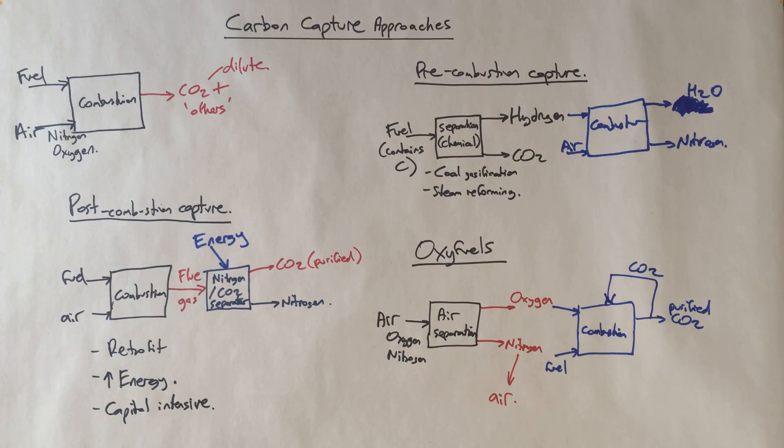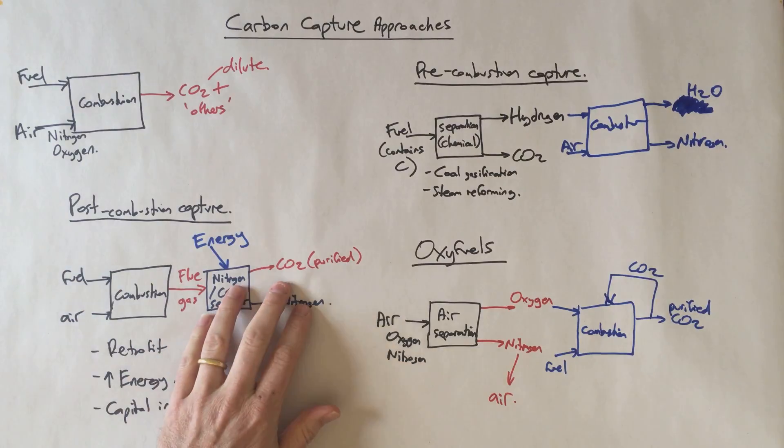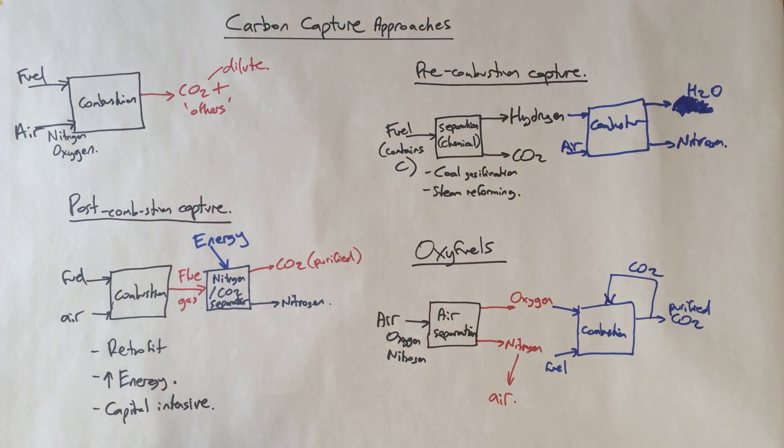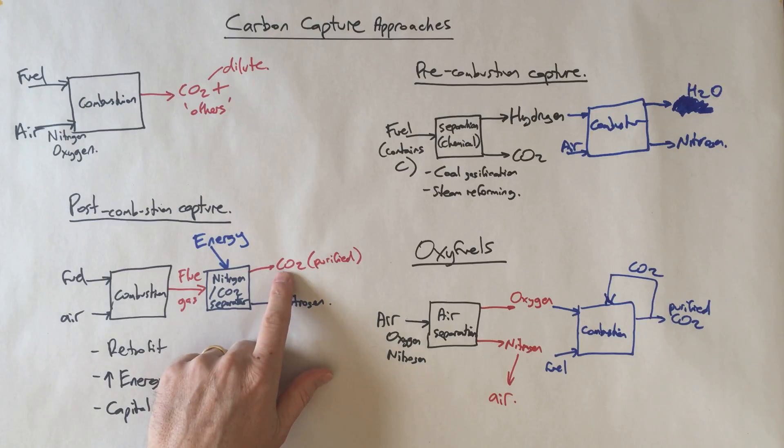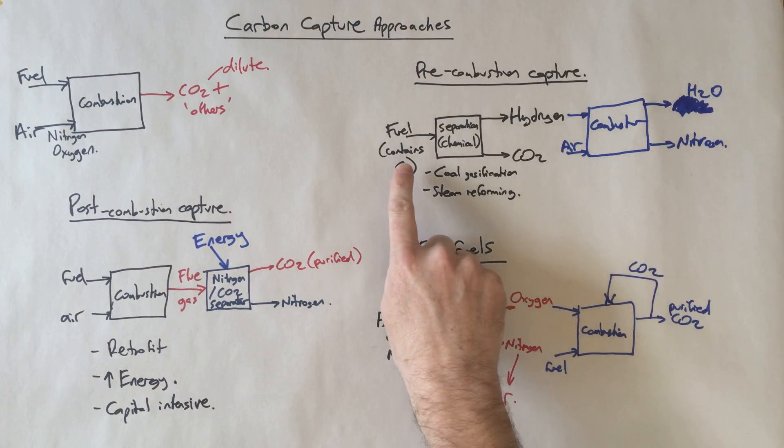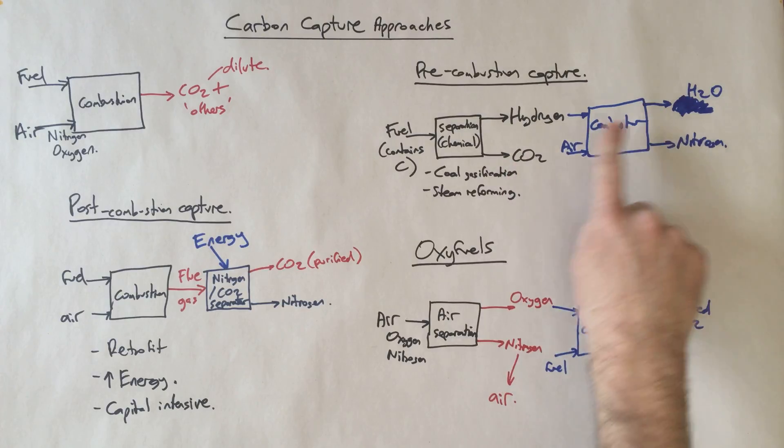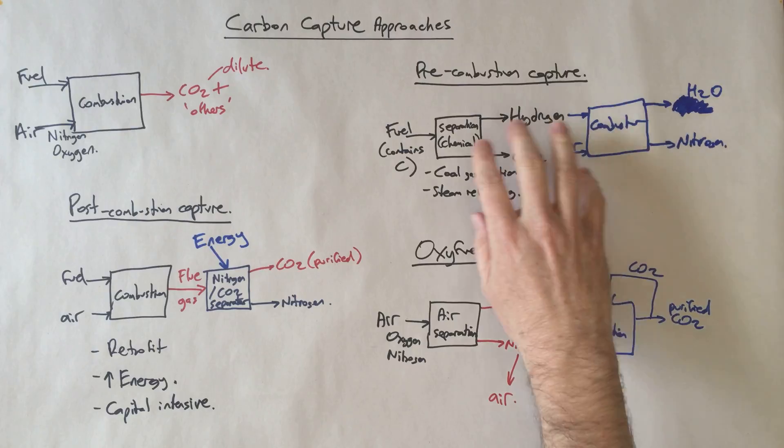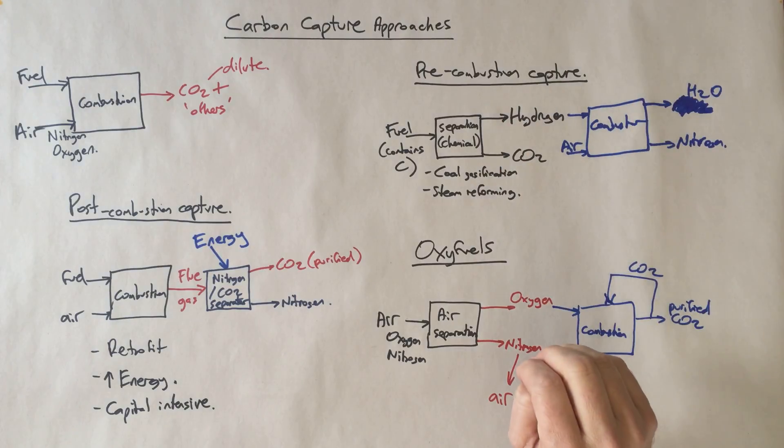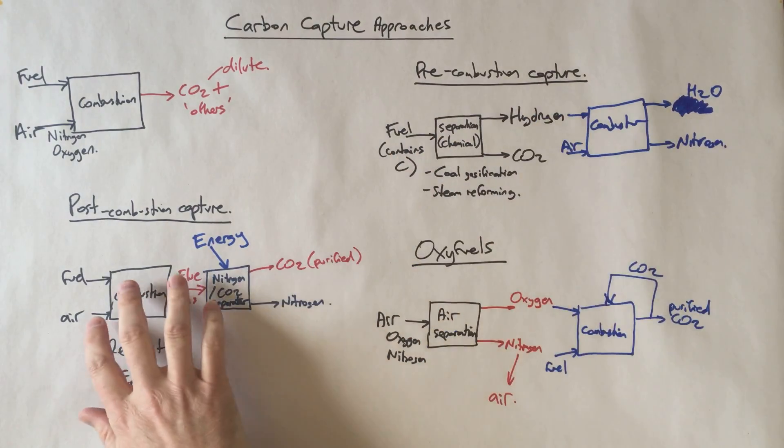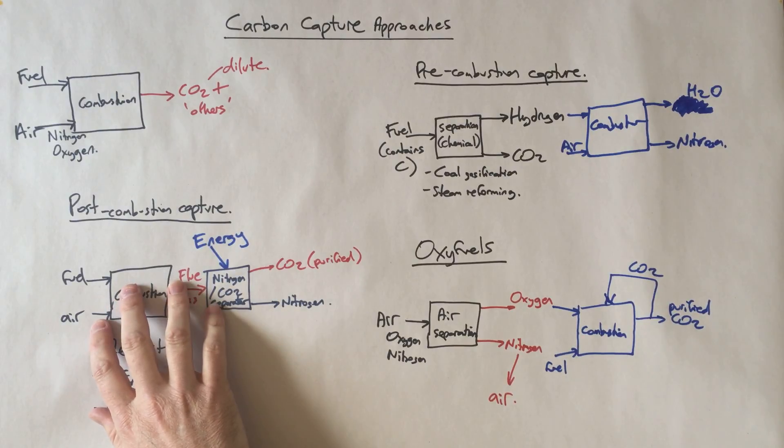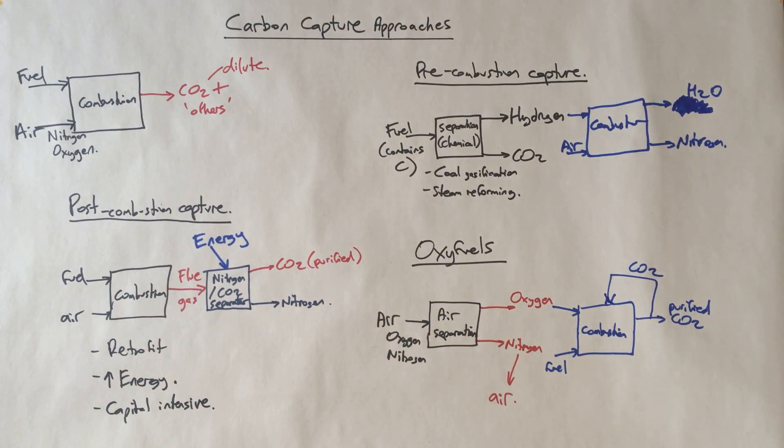So there you have it - there's the three sort of predominant approaches to carbon capture. Post-combustion capture where we can bolt something onto the end of our traditional combustion process and separate out CO2. Pre-combustion capture where we actually treat our fuel to remove carbon from it before we do any combustion - so effectively we're changing everything to a hydrogen combustion plant. As you can appreciate, that's a wholesale change and is not really suitable for retrofit. And finally, we have oxyfuels, which looks at the nitrogen side and removes the nitrogen from the system before we do combustion.